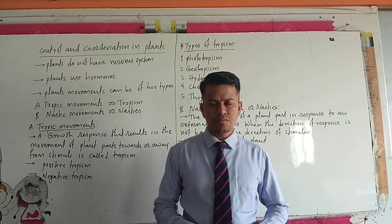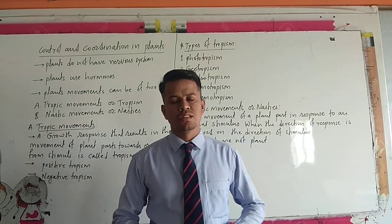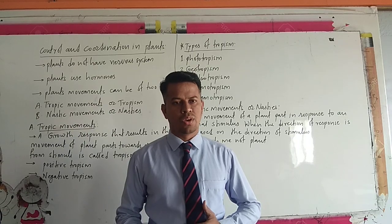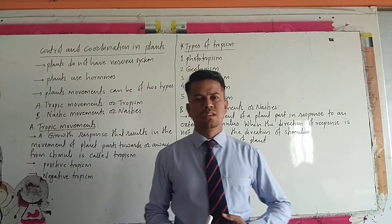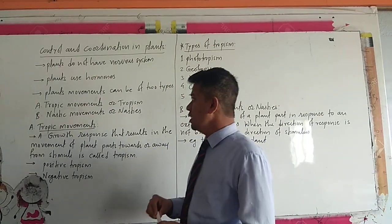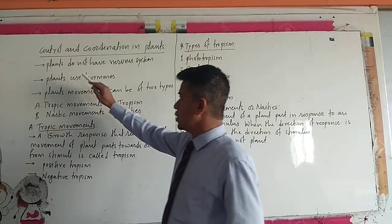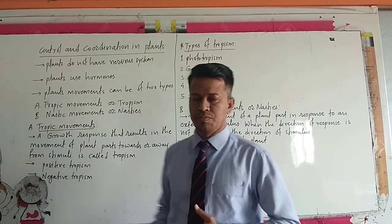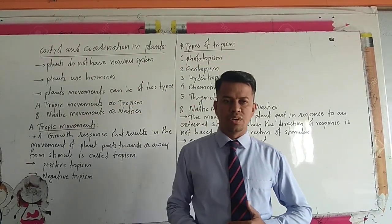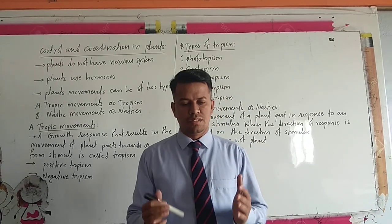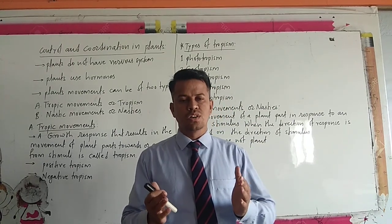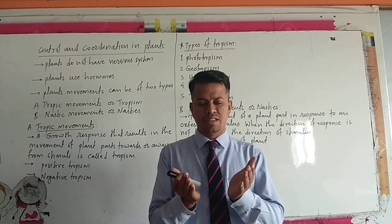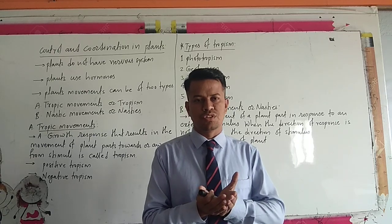Like animals, plants also have control and coordination in their body. They do not possess a nervous system like in an animal's body, where control and coordination is performed and controlled by the nervous system.